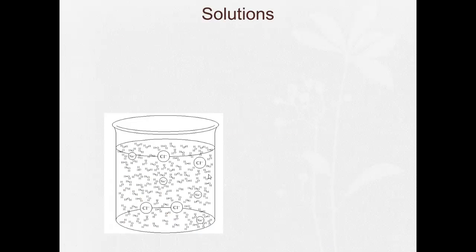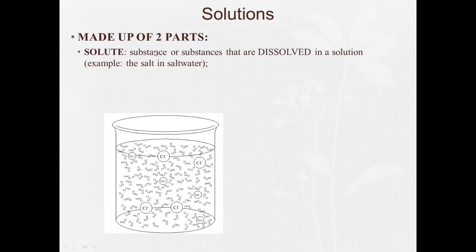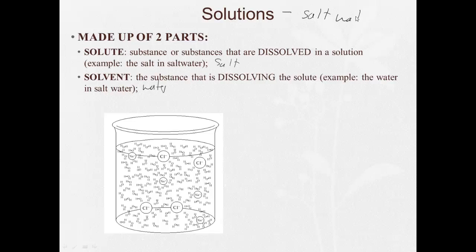All right, so solutions are going to be made up of two parts. The solute, the substance or substances that are dissolved in a solution. For example, the salt in salt water. The solvent is the substance that is dissolving the solute. For example, the water in salt water. So the salt is the solute, the water is the solvent, and the solution is the salt water. Now, aqueous is a solution in which water is the solvent, and we can see it's this AQ.